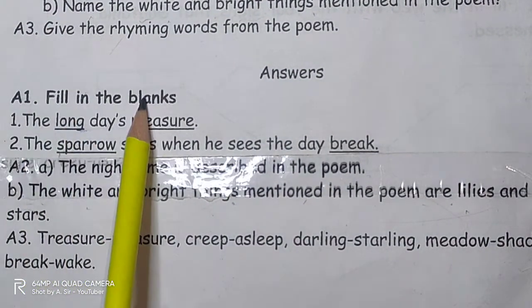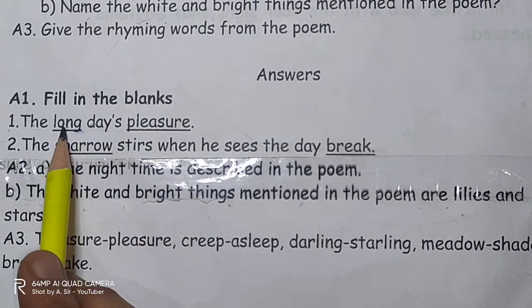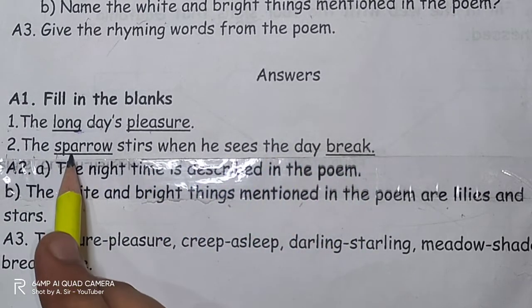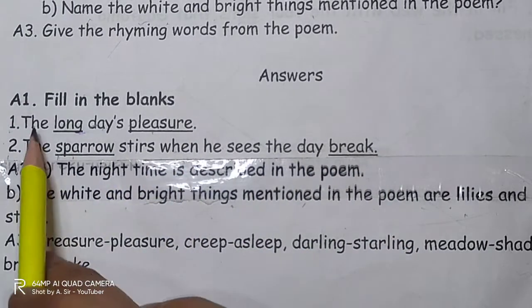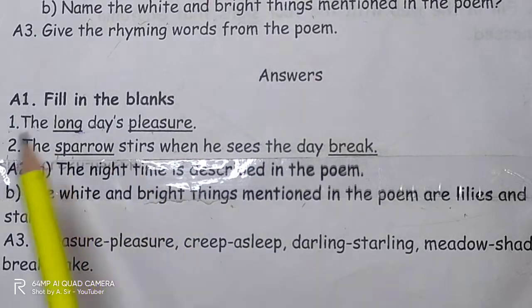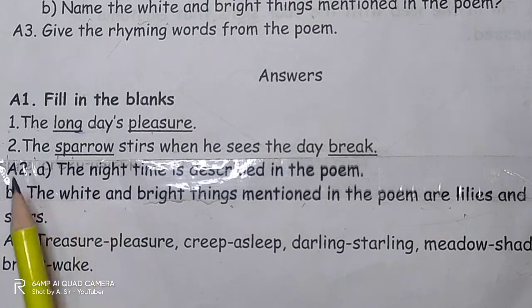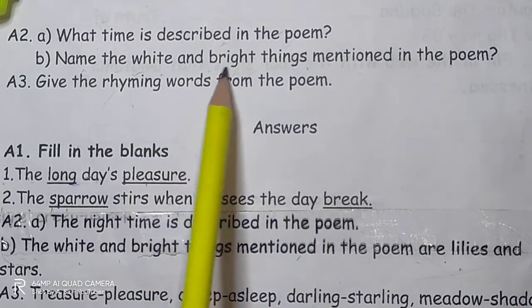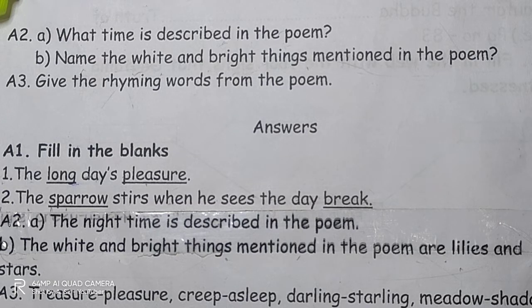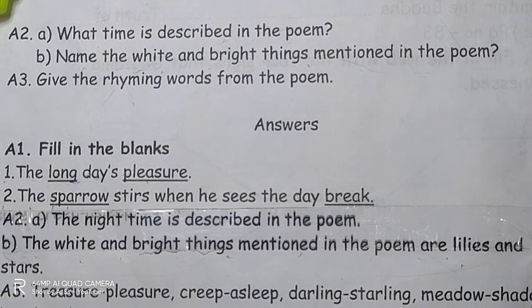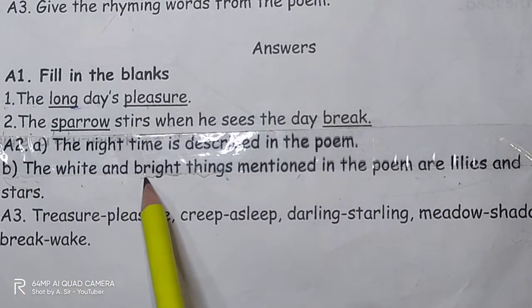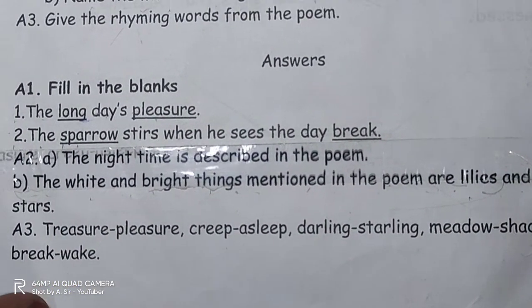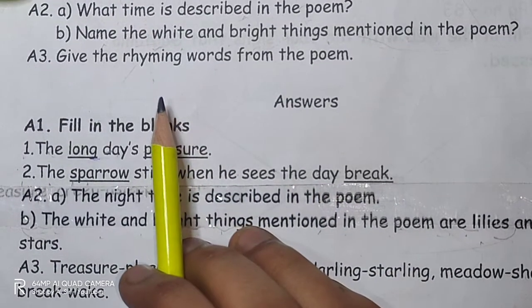So to recap: A1 fill in the blanks — first, 'the long day's pleasure'; second, 'the sparrow stirs when he sees the daybreak'. A2: What time is described in the poem? The night time is described in the poem. Name the white and bright things — the white and bright things mentioned in the poem are lilies and stars. Now the last question of the notes is A3.